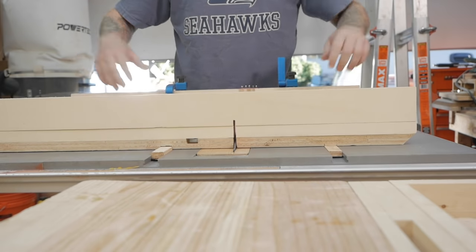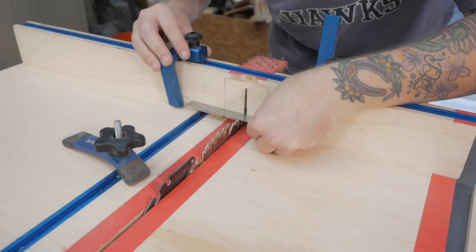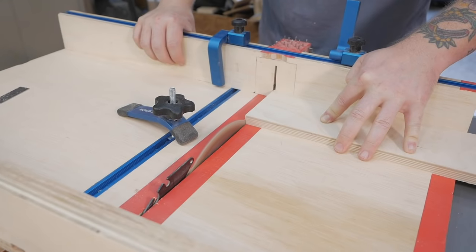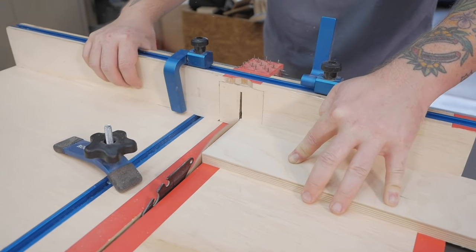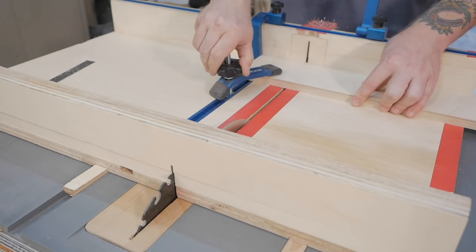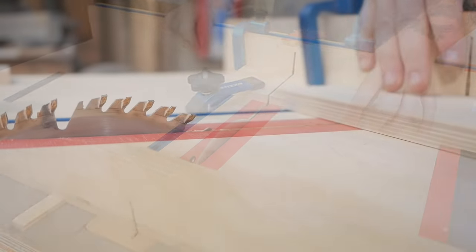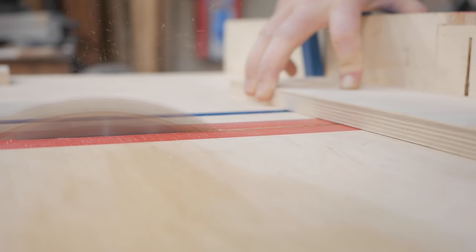I prefer my crosscut sled when making small project parts. I find it safer and more accurate than a miter saw. So after squaring the top of the workpiece, I place it against the stop, clamp it down, and make the cut for the head of the jig. Then, remeasure and cut the pieces for the sliding dovetail and handle.